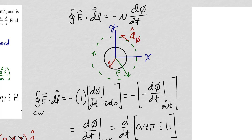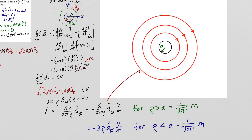You can also apply Faraday's Law to find the electric field intensity inside the solenoid. When applying Faraday's Law for rho greater than the radius of the solenoid, the amount of enclosed flux was always the same. When rho is less than the radius of the solenoid, the amount of enclosed flux is going to vary with rho. Applying Faraday's Law for rho less than the radius of the solenoid, you would find that the electric field intensity is 3 rho in the minus a sub phi direction, in volts per meter.